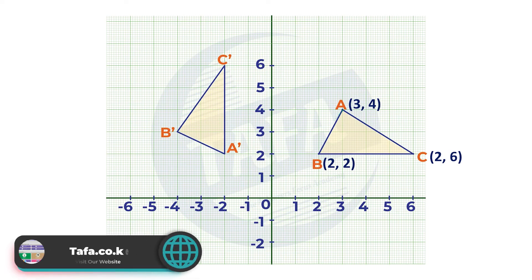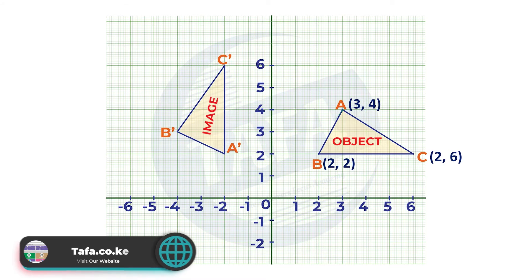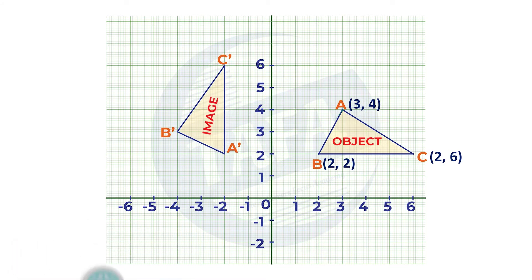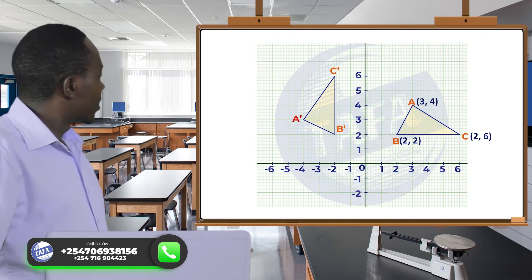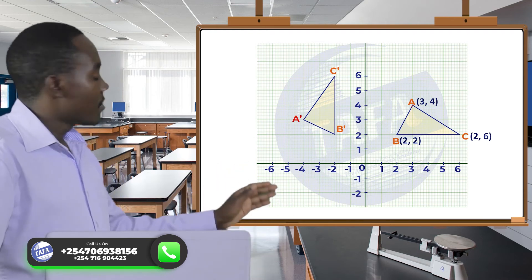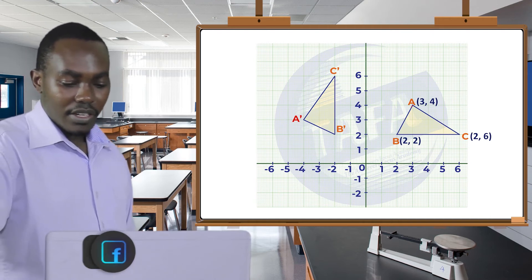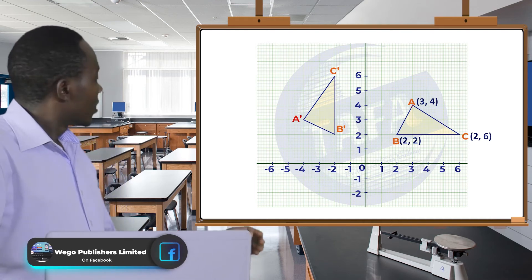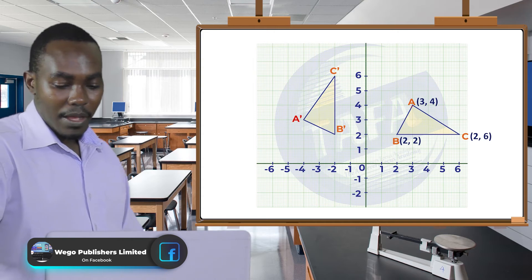Now the two figures, one is an object and the other one is an image after a certain transformation. I want to show you how the images were obtained. For example, A prime was obtained by